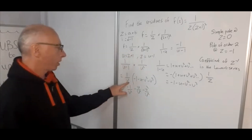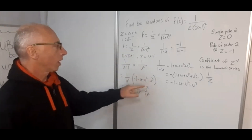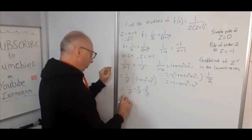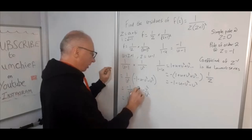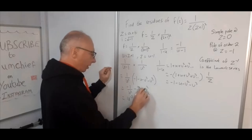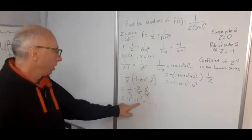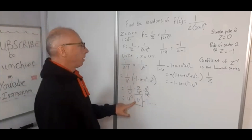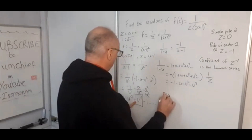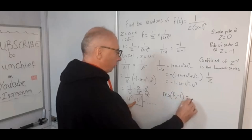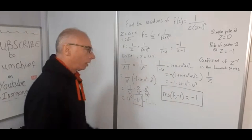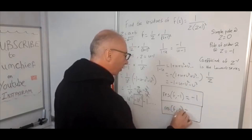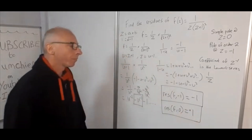We're interested in the coefficient of u to the power of minus 1. Distributing 1/u² gives -u⁻² - u⁻¹ - u⁰ - u¹ - ... The coefficient of u⁻¹ is minus 1. So the residue of f at z = -1 equals -1. To summarize: the residue of f at z = 0 equals +1, and the residue of f at z = -1 equals -1.